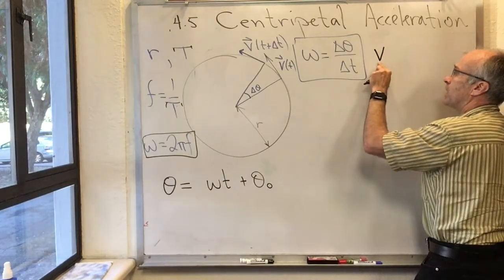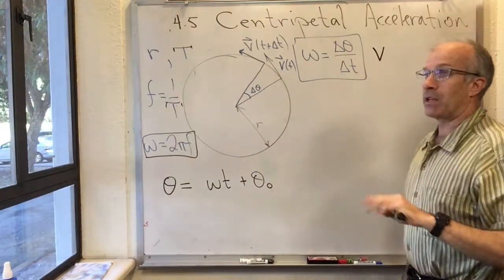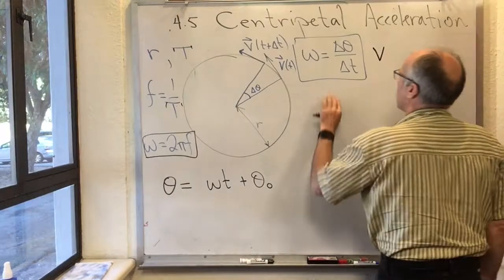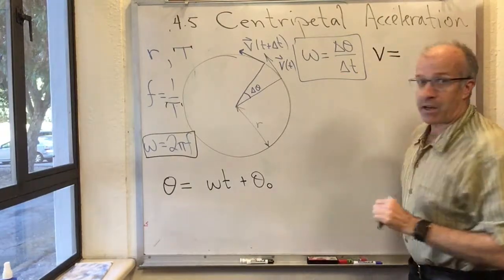V, which is the length of the vector V, which we say is the speed. V is equal to, well, here's one easy way to calculate it.